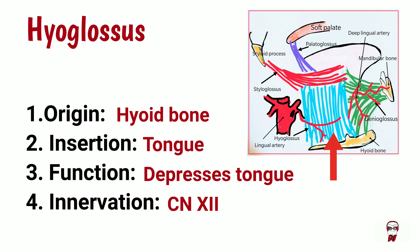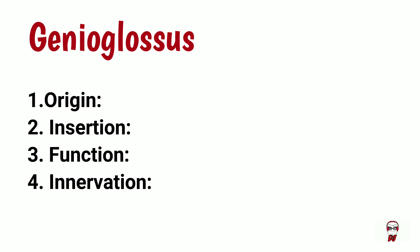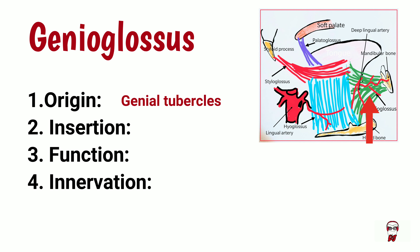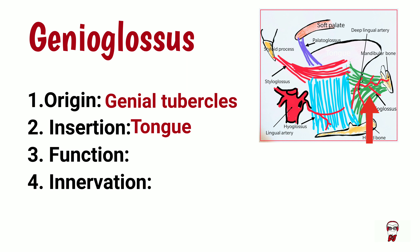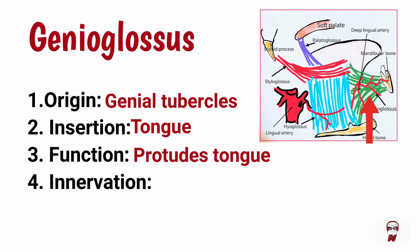Next is the genioglossus muscle, which is a fan-shaped muscle originating from the genial tubercles, or the mental spine, and inserts into the side of the tongue. It protrudes the tongue and is also innervated by the hypoglossal nerve.